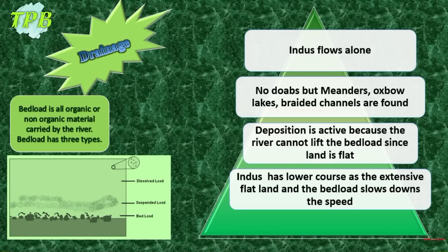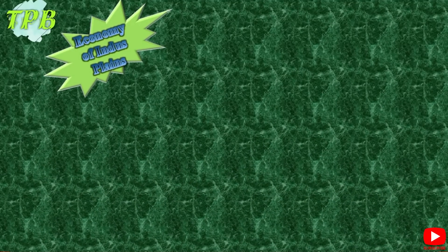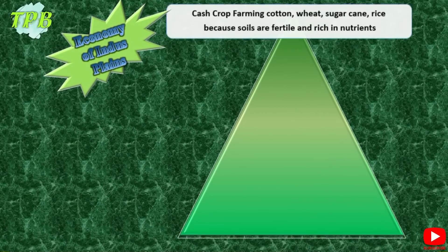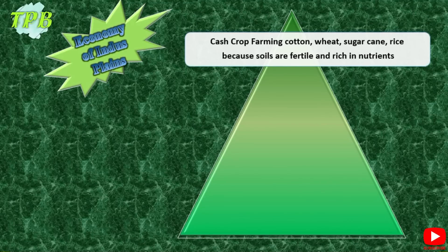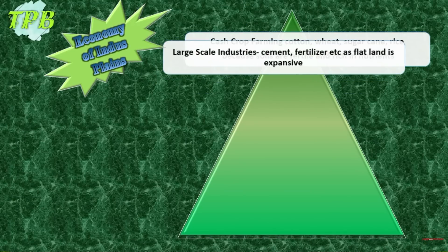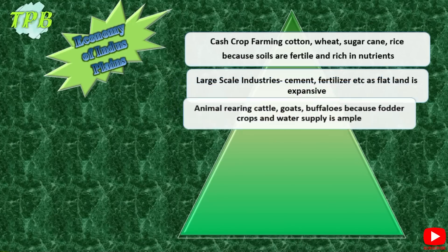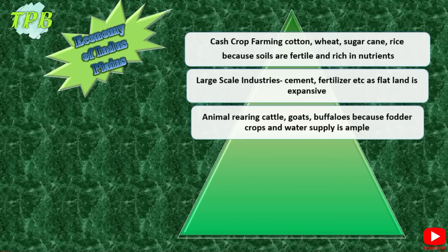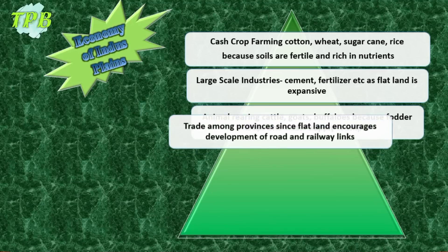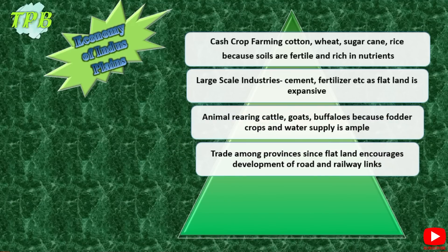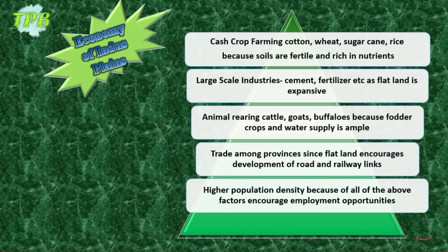Both Upper and Lower Indus Plains are economically very active. Cash crop farming of cotton, wheat, sugarcane, and rice is practiced here because the soils are fertile and rich in nutrients. Large-scale industries like cement and fertilizer can be installed here because the land is flat and machinery can be set up easily. Animal rearing of cattle, goats, and buffaloes is widely practiced since fodder crops are grown and water supply is ample. Trade among provinces is very active since flat land encourages the development of road and railway links and dry ports. Due to all these reasons, population density is high in both plains, as they provide and encourage employment opportunities.